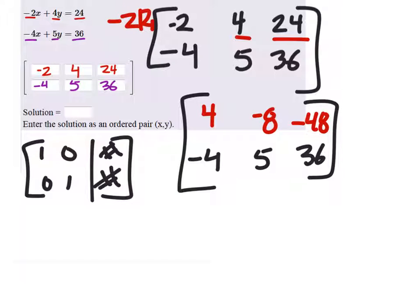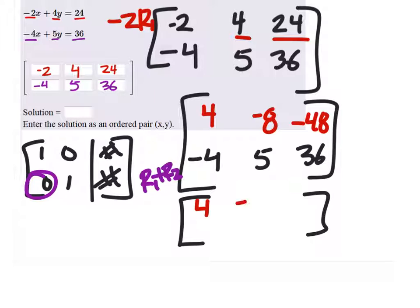Well, now, if I take row 1 and add it to row 2, I'll have the 0 right there, which I want. So let's go ahead and do that. I'm not changing row 1 right now, but you could. And so we get 0, negative 3, and negative 12.